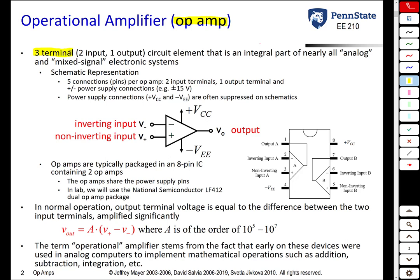Unlike resistors, voltage sources, and current sources that are two-terminal devices, op-amps are three-terminal devices with two input terminals and one output terminal. Technically the statement is not quite right — they're really five terminals. In addition to the two inputs and one output, there are two power supply terminals. The op-amp is an integrated circuit, or IC, so it needs to be powered externally by plus or minus power supply voltages, typically plus or minus 15 volts. But when we talk about the op-amp, we often suppress those two power supply terminals and just call it a three-terminal device.